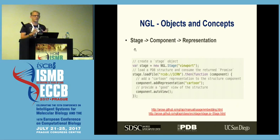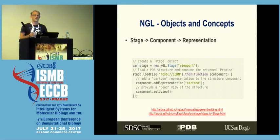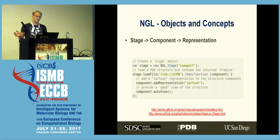Here's a scheme of how the library is organized. You create the stage object, and whenever you load a file onto it you create a component. At that point you haven't done any visualization yet — you can just do calculations on it. So the viewer is not only a viewer; you can use it as a library to do calculations on the client side, because not everything has to be pre-computed on the server.